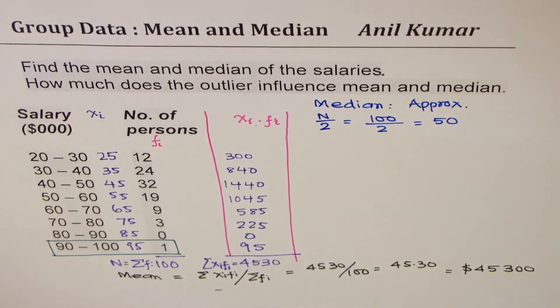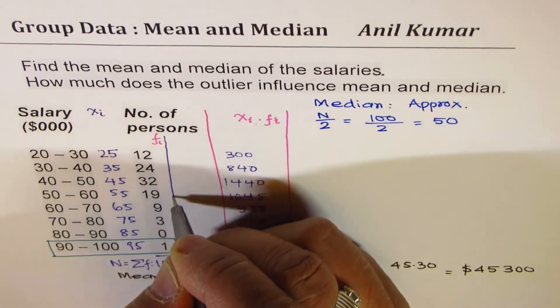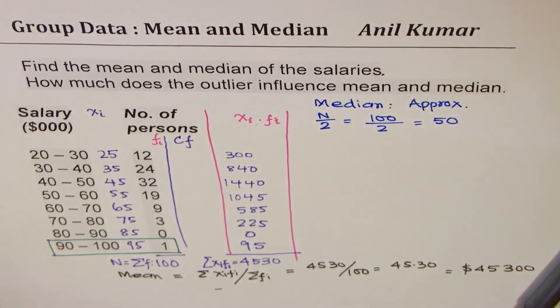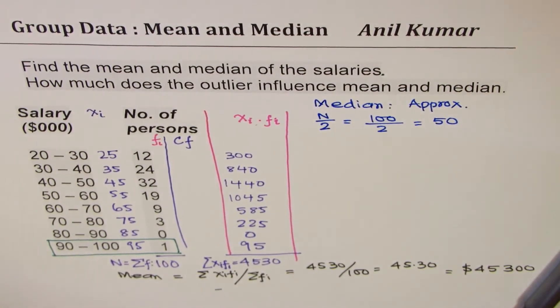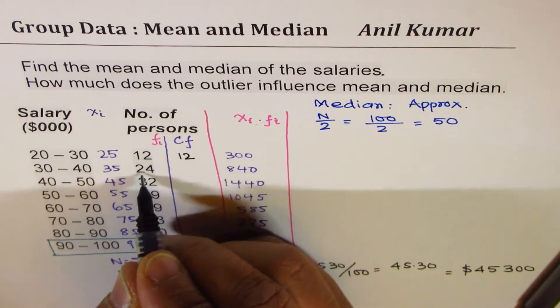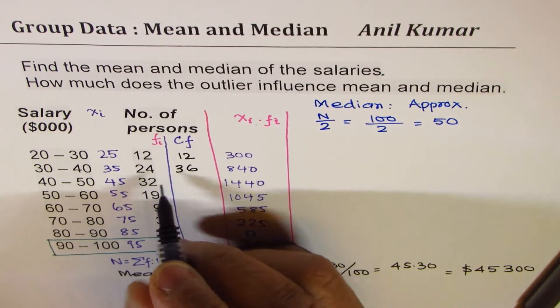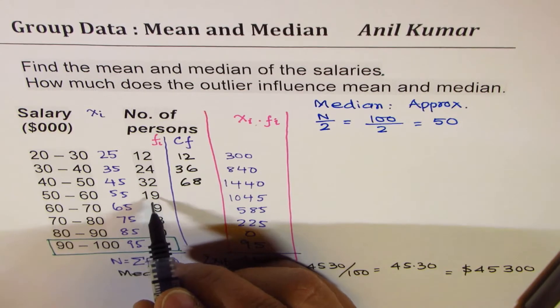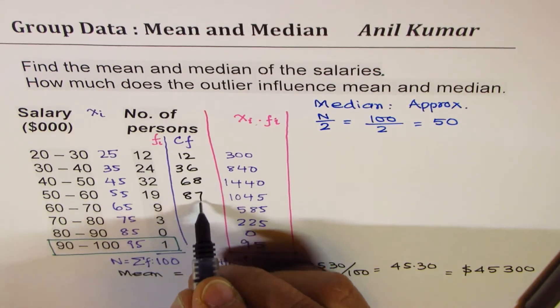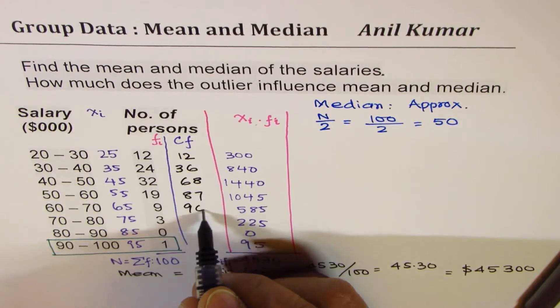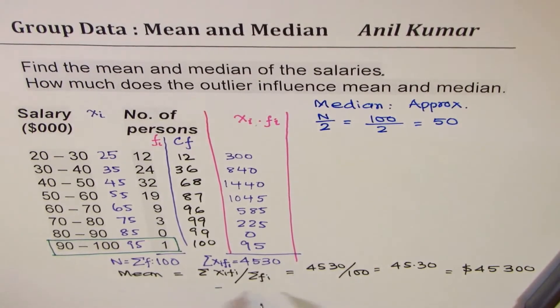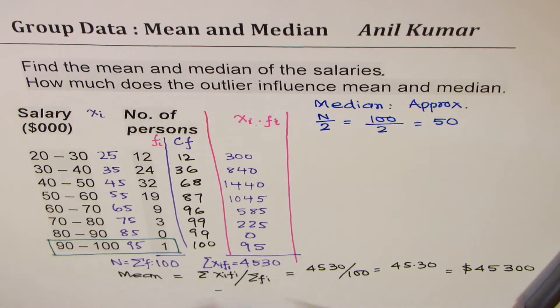For that, I think we'll have to first add a column here based on cumulative frequency, and then we'll be in a position to calculate. So let's do that part first. We have 12 here. Adding 12 to 24 gives us 36. Adding 36 to 32 gives us 68. 68 plus 19 is 87. Plus 9 gives 96. Plus 3 is 99. And that makes it 100. So that becomes the cumulative frequency column.